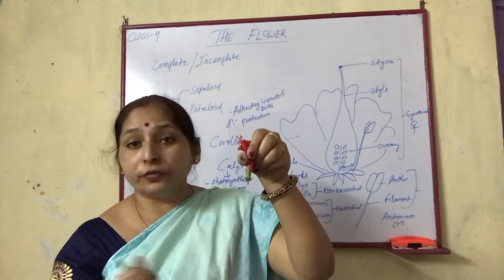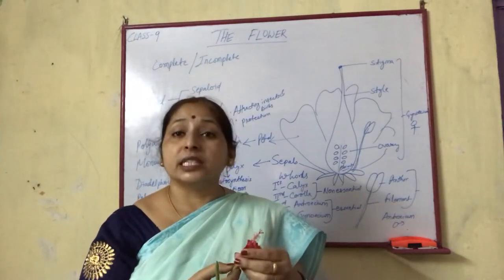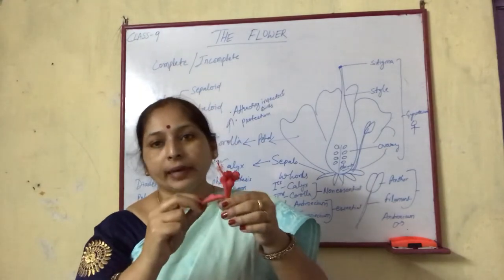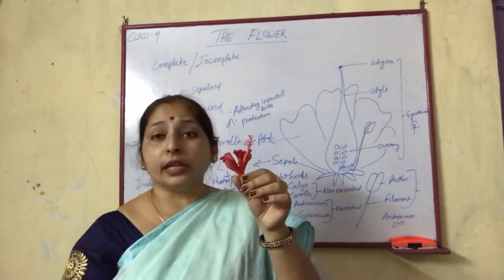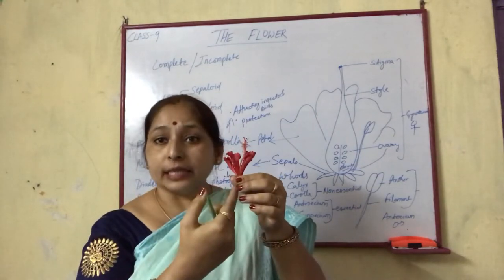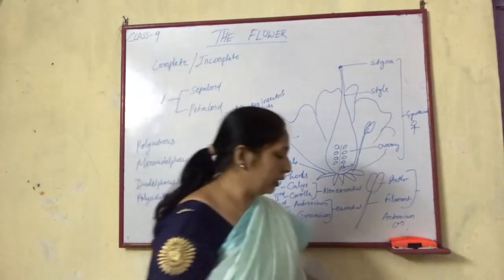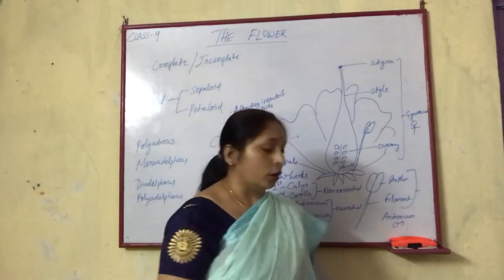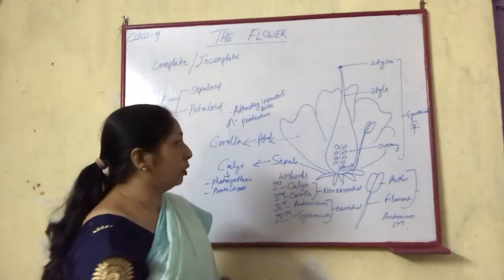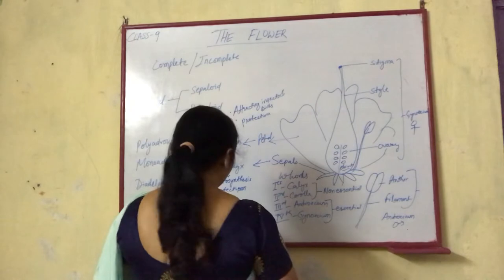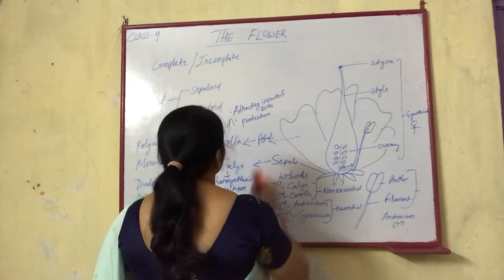More terms in your syllabus are gamosepalous and gamopetalous. In the hibiscus flower, if the sepals are joined or fused together, the term used is gamosepalous. In the case of petals, if the petals are free, the term is polypetalous or polysepalous. When they are fused, it is gamosepalous or gamopetalous. So 'gamo' is for fused or joined structure, while 'poly' is for free structure.